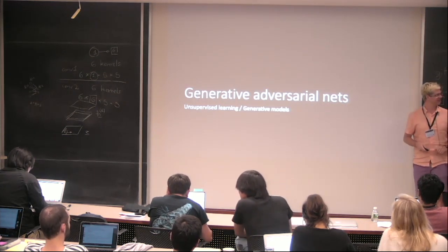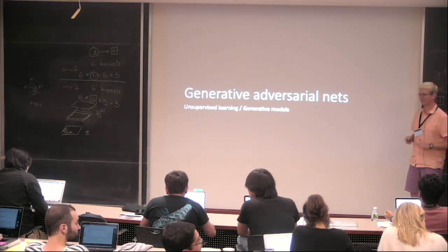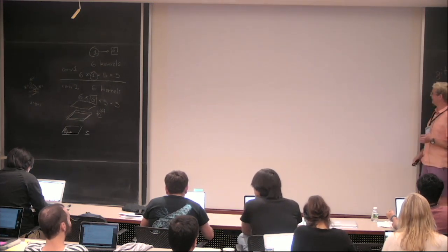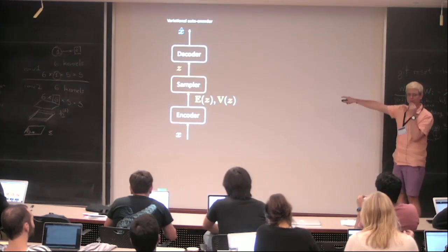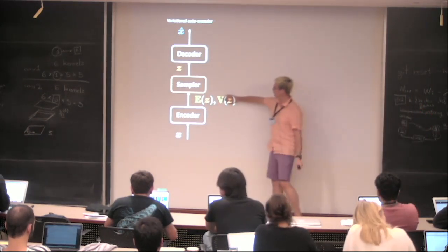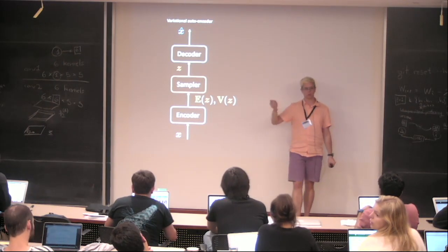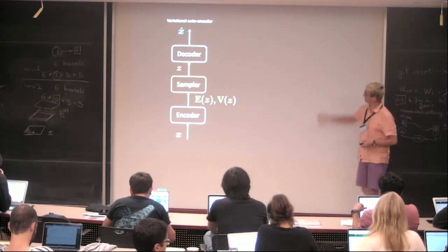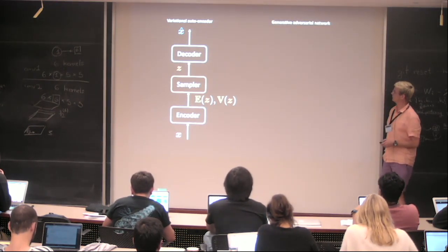One more minute. Generative adversarial networks. In the variational autoencoder we had twice as many encoder outputs to include uncertainty for each element. GAN is very similar. We have a sampler here — same as before — but in the VAE the sampler got information from the input. In GANs there is no input conditioning. We have a generator (same color as the decoder) that gets noise and produces X hat.